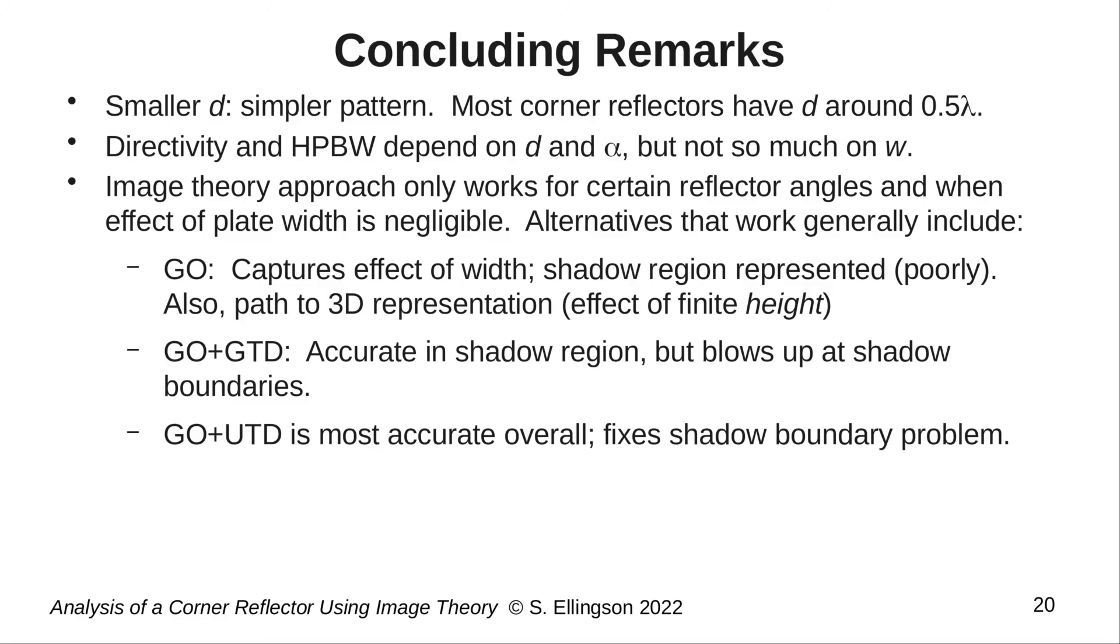An even more general approach is to use G-O and then to add diffraction, for example, using G-TD. This will be accurate everywhere except along the shadow boundaries, where G-TD has the unfortunate characteristic of predicting infinite magnitude. This is easily fixed by using U-TD instead of G-TD. So, G-O plus U-TD is probably the best overall way to do this problem. To get started with that approach, a good starting point might be my videos Uniform Geometrical Theory of Diffraction Part 2, Example, and Cylindrical Parabolic Antenna, U-TD.